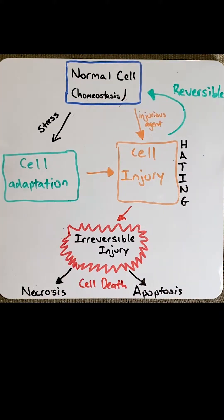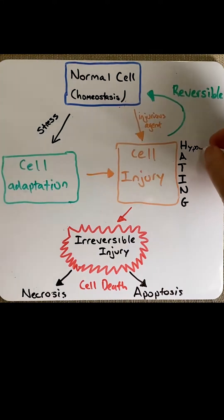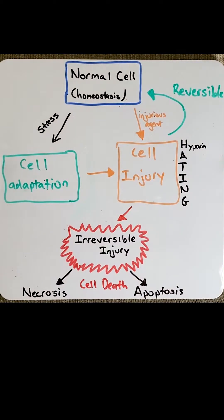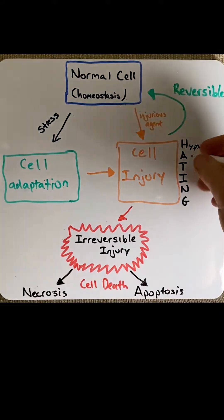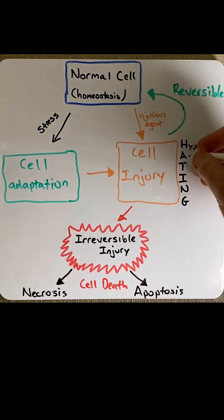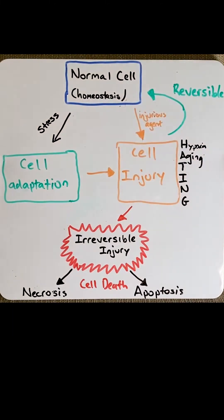H is for hypoxia. Hypoxia or ischemia is a reduction in blood flow or oxygen to cells, which will cause injury. A is for aging. So as we age, our ability to adapt reduces and we are more likely to lead to injury.